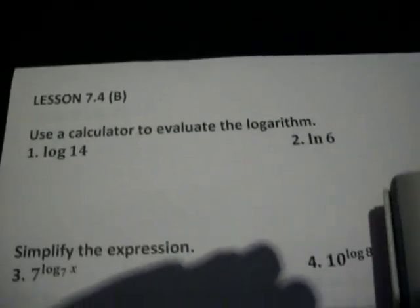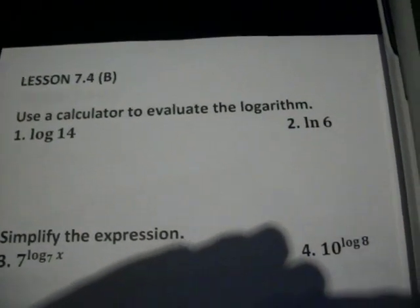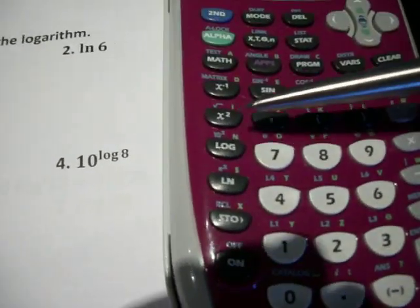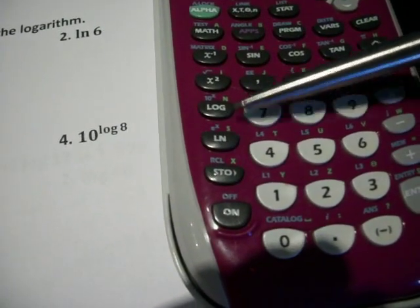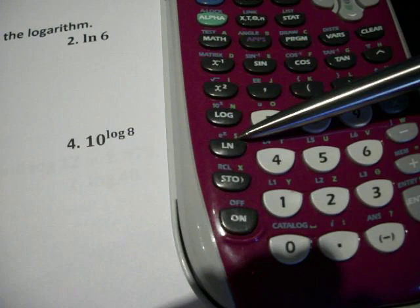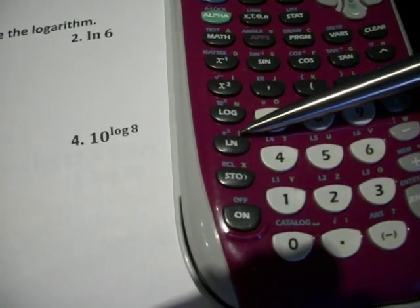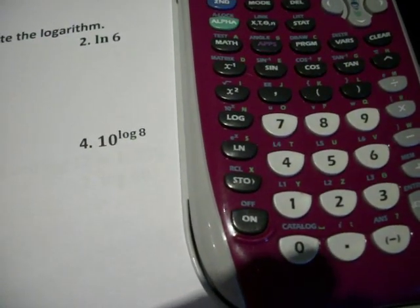This is all going to be on the calculator. So all you do for these first two, you'll see on the calculator right here and here. Those two buttons. This is the common log and this is the natural log. So it depends on which one you're trying to take.